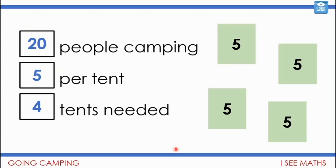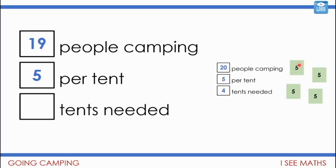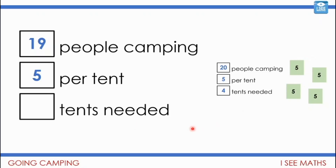What if 19 people were camping and we were having five per tent? How many tents would we need, and how would that picture look different from 20 people camping? Pause the video. My adapted picture shows that rather than five in each tent with four tents, we'd still actually need all four tents — the only thing is I'd have one less person in the last tent. So I'd have three full tents and then four people in the last one. I'd still need the same number of tents.